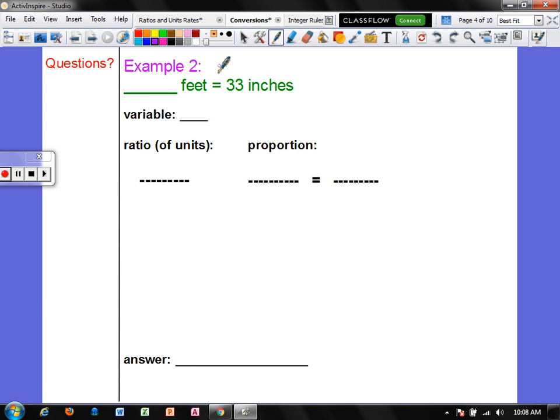Alright, example two: how many feet equal 33 inches? So since we're trying to find the number of feet, I am going to use f as the variable. And my ratio of units, I'm going to set up as feet to inches. If you look at your STAAR chart, you would see that one foot equals 12 inches. So I'm going to use that to set up the first ratio. So one foot is 12 inches.